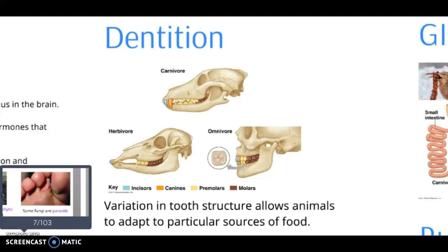In this video we're going to finish talking about nutrition. The first topic is dentition, about the different types of teeth that different organisms have. Herbivores, carnivores, and omnivores have different shapes and different numbers of teeth, and that allows the animals to be more adapted to the specific food that they eat.